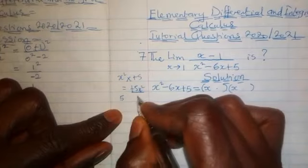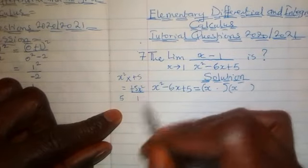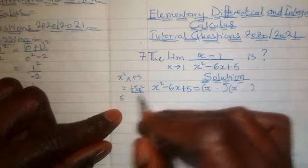Now what are the factors of 5? We have 5 and 1. And frankly speaking, these are the only factors that we have here.